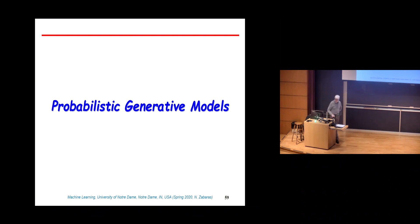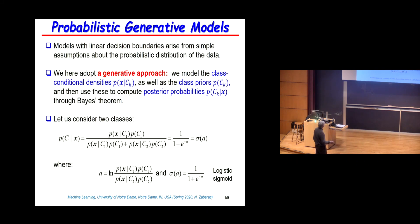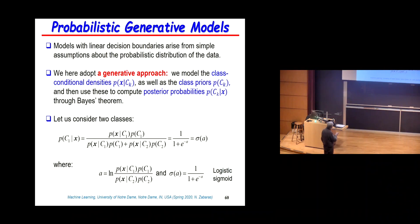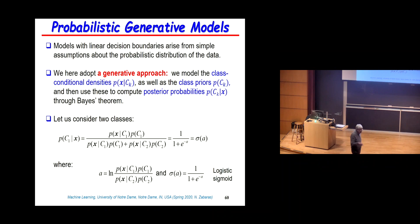I'm going to summarize what we were discussing about this simple example of generative models using Gaussian distributions, and then where we stopped was to do the maximum likelihood estimation. The model is generative because to assign X to different classes we use Bayes' rule, which requires that we know the class conditional distributions — we need to know how the data was generated for each class.